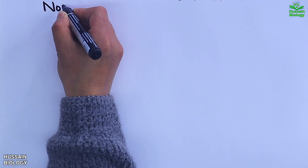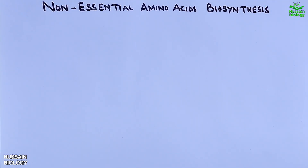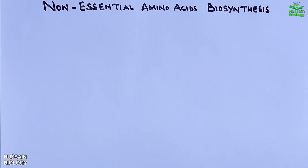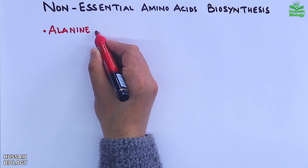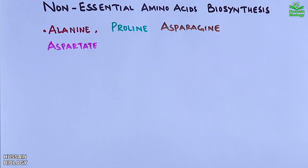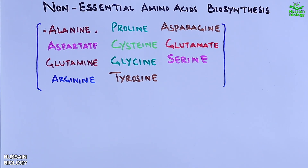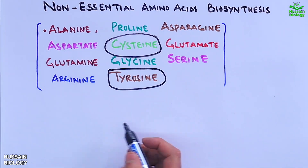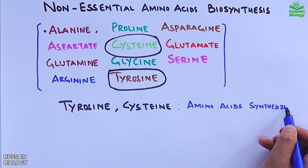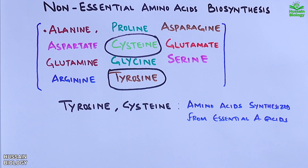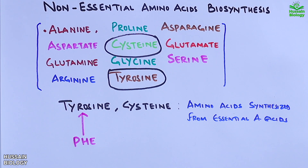In this video we'll be discussing non-essential amino acid biosynthesis. The non-essential amino acids include alanine, proline, asparagine, aspartate, cysteine, glutamate, glutamine, glycine, serine, tyrosine, and arginine. It must be noted that tyrosine and cysteine are non-essential amino acids synthesized from essential amino acids — they are dependent amino acids. Tyrosine is synthesized from phenylalanine, whereas cysteine is synthesized from methionine.